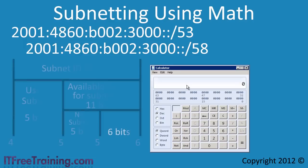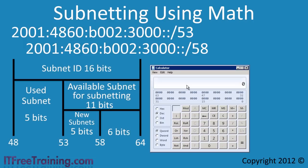When we change from the first network range to the second network range, the first binary digit will change from 0 to 1. Working out what this value is will give us the amount that we need to increment each time. To do this, first select binary mode.